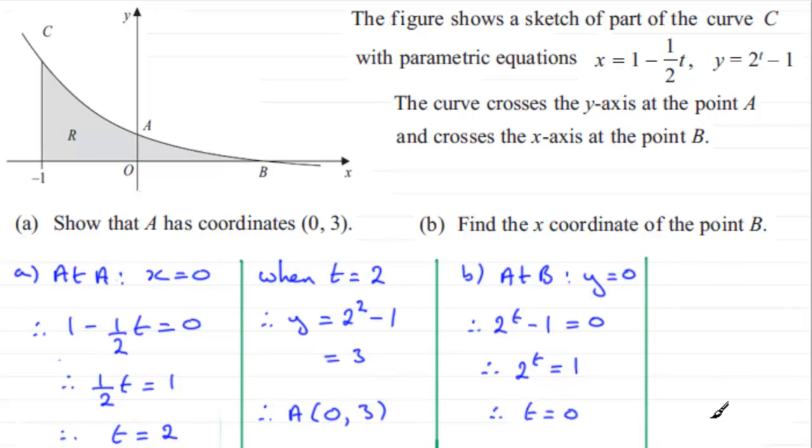And we now can say that when t equals 0 we can work out what x is. So therefore x simply equals 1. So therefore the coordinates of B are going to be 1,0.